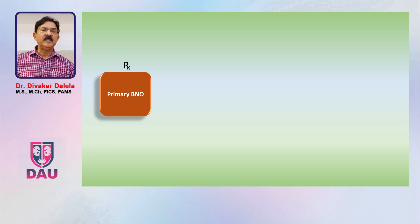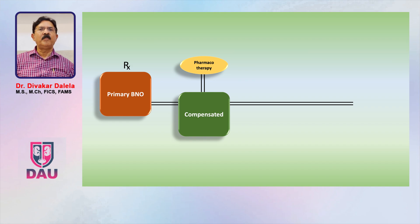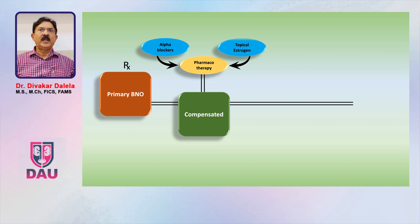If the patient has a primary bladder neck obstruction, again in the early stage where detrusor pressure is high — this is called compensated obstruction — because of increasing resistance at the bladder neck the detrusor generates higher pressure, and the patient is able to maintain some urinary flow but notices obstructed flow. This patient can be treated by pharmacotherapy: either an alpha blocker, topical estrogen, or a combination of both, depending on the patient's age.